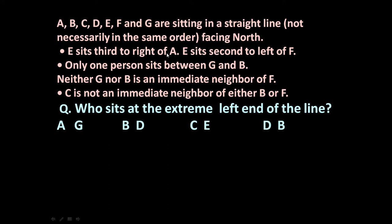E sits third to the right of A. E sits second to the left of F. Only one person sits between B and G. Neither G nor B is an immediate neighbour of F. C is not an immediate neighbour of either B or F. The question is: who sits at the extreme left end of the line?